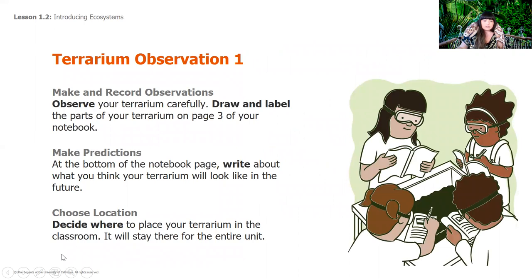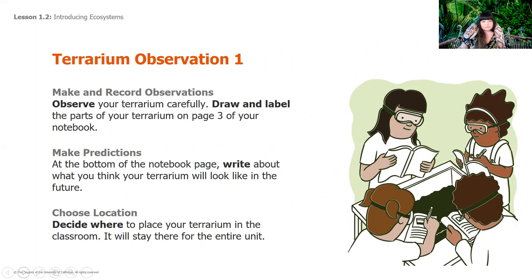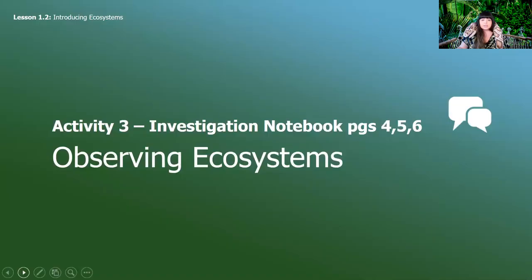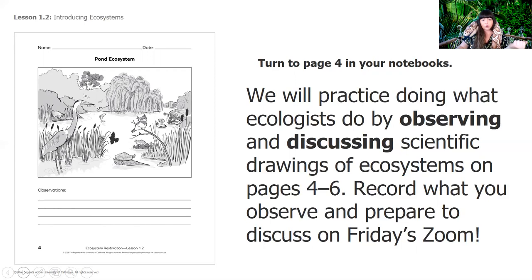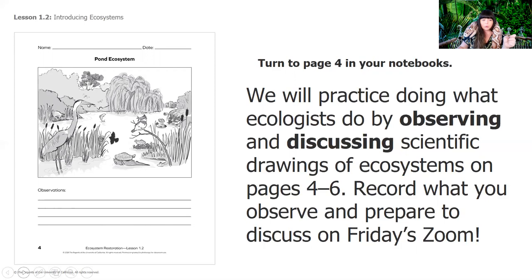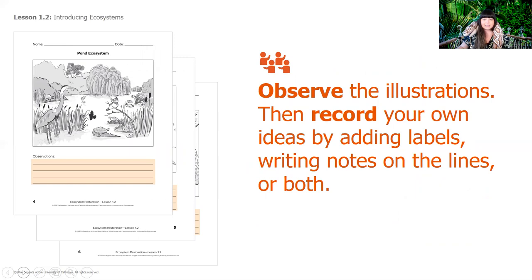So this would have been our job — to observe our terrarium. But because we can't do that, we are going to look at three different examples of ecosystems. When we observe, we use any of our five senses to gather information about something. We cannot go visit a pond, a desert, or the rainforest right now, so we're going to use our sight to look at pictures and observe and discuss what we think the drawings are showing us. What are you observing? This is going to be part of your homework — looking at the investigation, pages four through six: a pond ecosystem, a desert, and the rainforest. Then you're going to look at all three and make comparisons: how are they the same, how are they different?